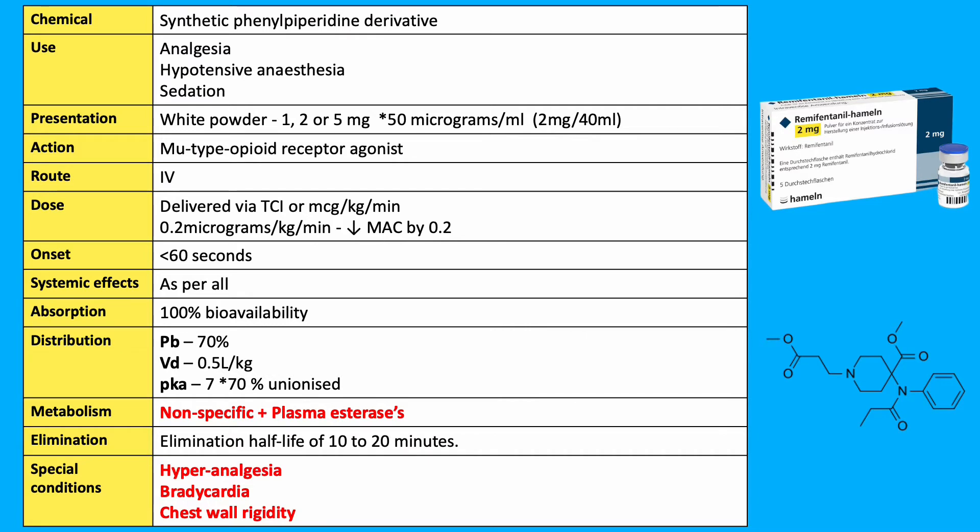It's presented as a white powder at 1, 2 or 5 mg. It's commonly given at 2 mg and diluted in 40 mls of either saline, 5% dextrose, or water for injection. It's given at 50 mcg per ml. It's a mu-receptor agonist and given by the IV route.